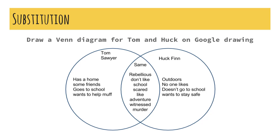In the substitution level, we see a Venn diagram that can be easily drawn on paper, but the lesson replaces the paper with the Google Drawing app. A good start, but we can build on this.